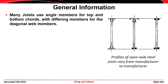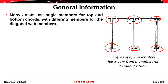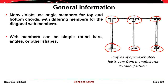Many joists use angle members for the top and bottom chords. In the image here, the joist on the left uses angles for the top and bottom chords. You can also have some type of cold-formed or hot-rolled section for the compression flange with bars for the bottom flange. On the right, round bars are used for both the bottom and top flange. For the web members, they could be angles crimped at the ends, round bars, or other shapes.